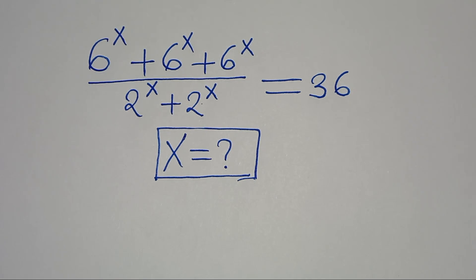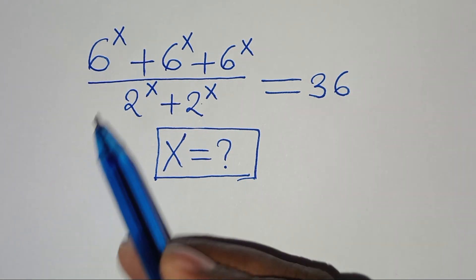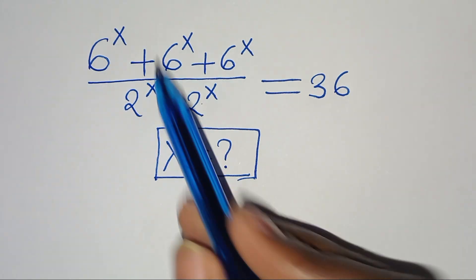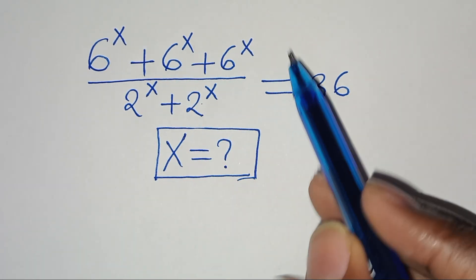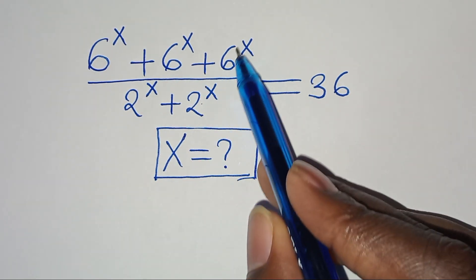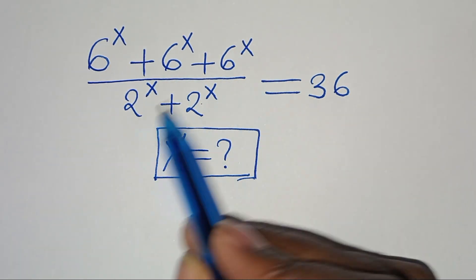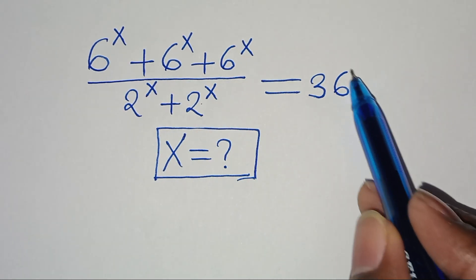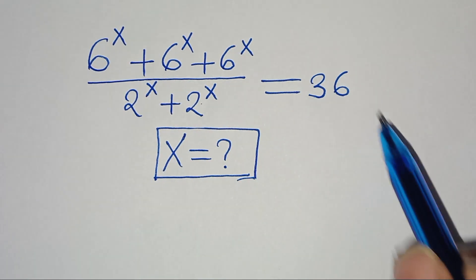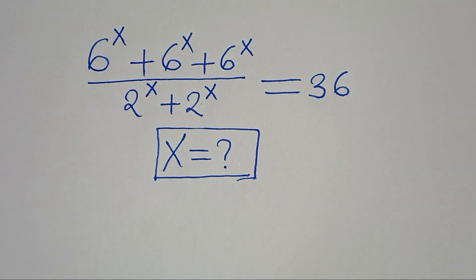Hello everyone, you're welcome to solve this nice exponential equation, which is 6 to the power of x plus 6 to the power of x plus 6 to the power of x, divided by 2 to the power of x plus 2 to the power of x, and this is equal to 36. So what is the value of x?